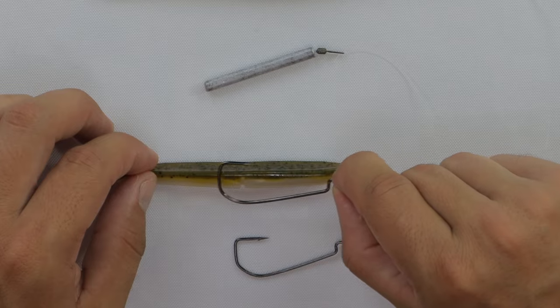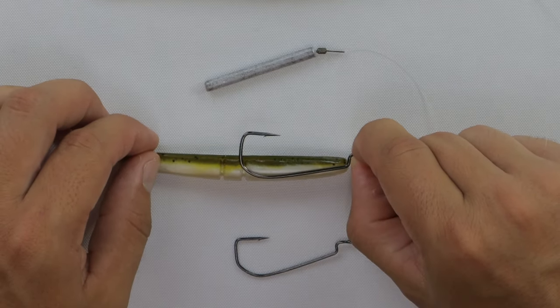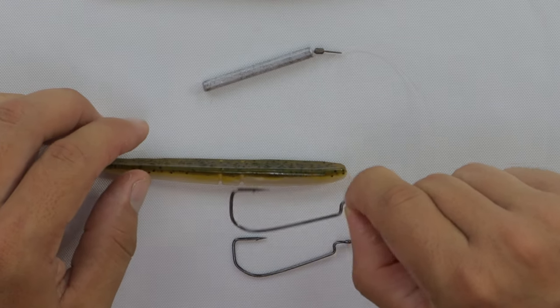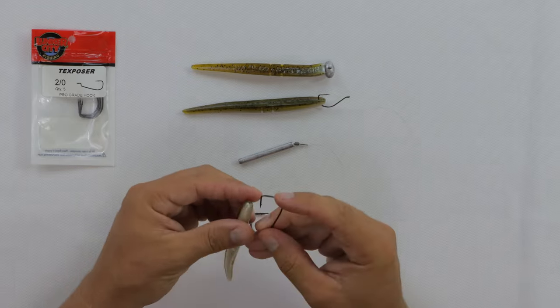Once you get to the point where the hook is going past those two indents or slits in the body of the Sluggo, you really start to hinder the action of the bait. So I'm going to opt for the 2-0, but you can use the 3-0 if you want to.